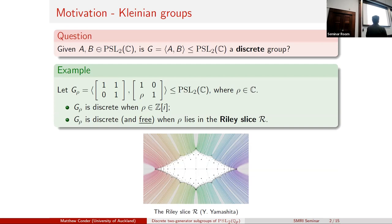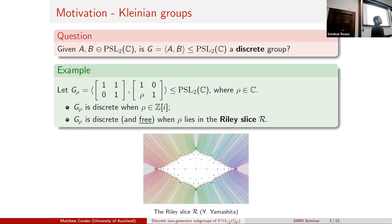The Riley slice is defined based on this group. But then there's Yeroen and Gavin Martin, based at Massey in Auckland, who have been working on generalizations of this to any two-generator subgroup. You can have some parameters and get some analog with the Riley slice in that particular setting. But the original Riley slice was just for groups of this form—two-generator subgroups with one parameter.